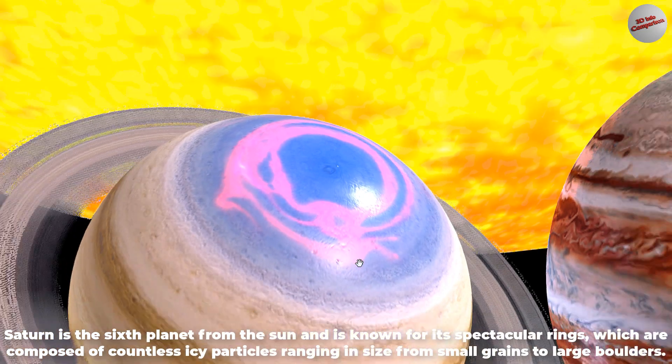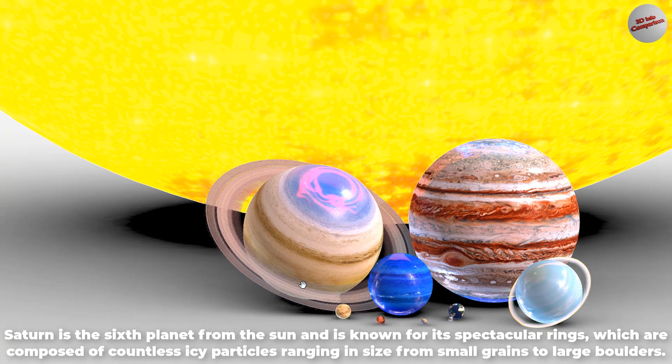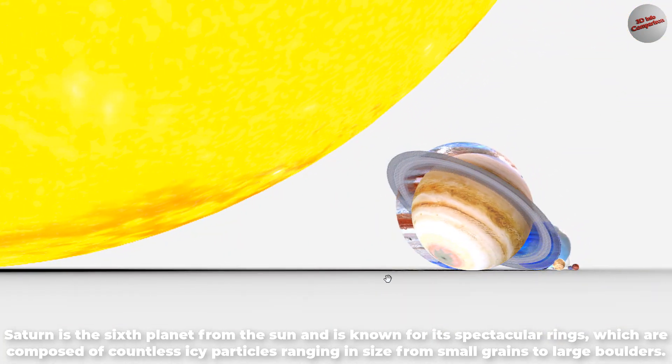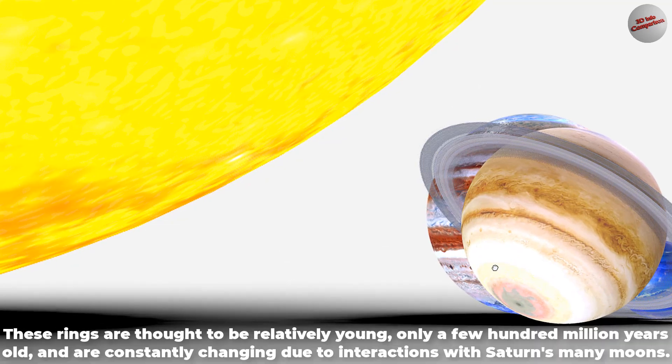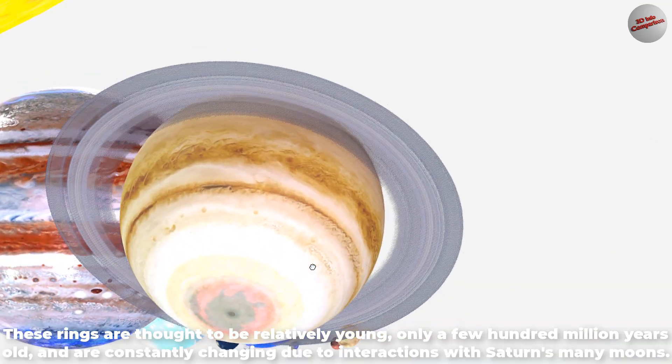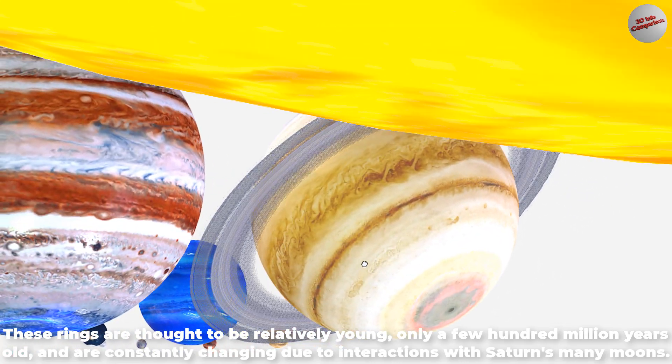Saturn is the sixth planet from the Sun and is known for its spectacular rings, which are composed of countless icy particles ranging in size from small grains to large boulders. These rings are thought to be relatively young, only a few hundred million years old, and are constantly changing due to interactions with Saturn's many moons.